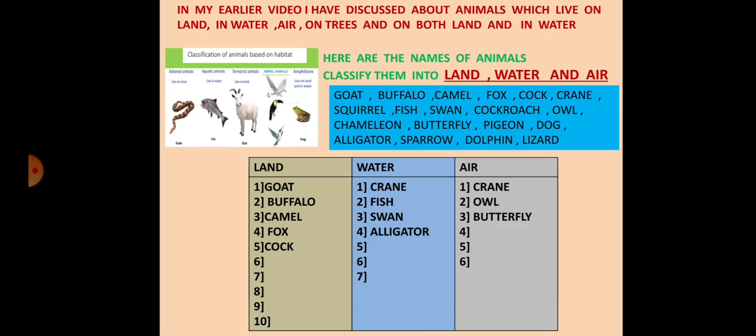And I have helped you here. In land I have written goat, buffalo, camel, fox, cock. In water I have added crane, fish, swan and alligator. And in air I have given crane, owl and butterfly. But there are some more animals in the box. You have to classify as I have shown you. Understood? Okay. Let us go to the next question.